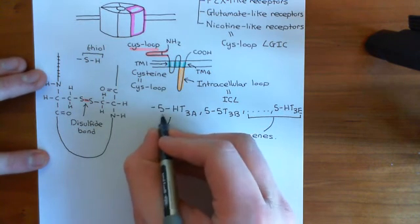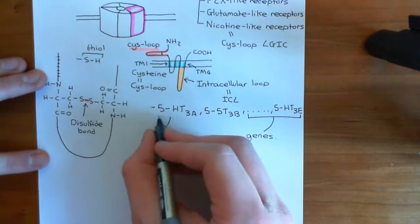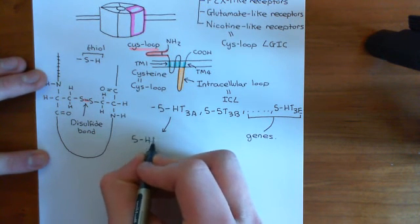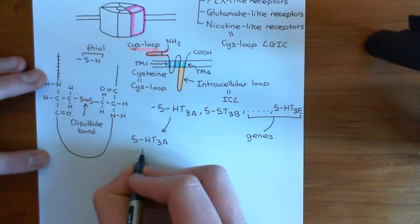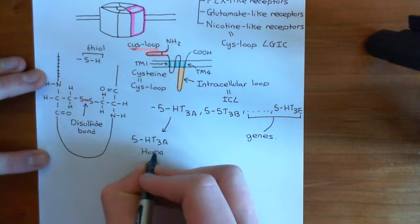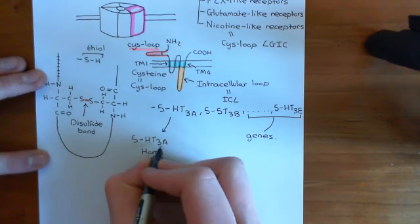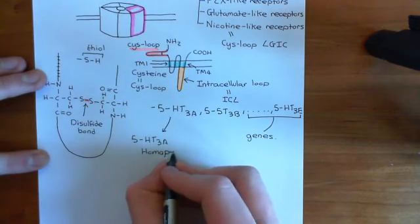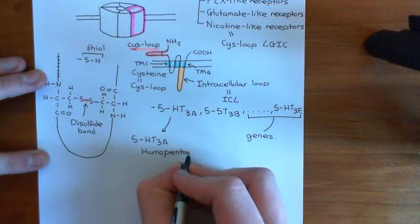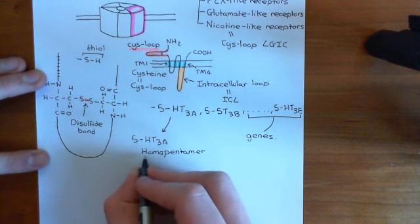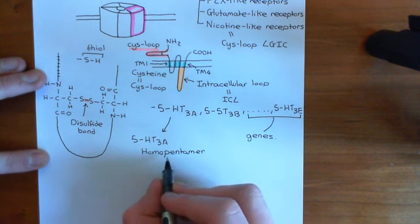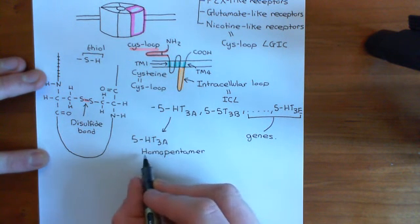One way is that you can pentamerize five 5-HT3A receptor subunits together to make a 5-HT3A homopentamer. If you make five 5-HT3A subunits and join them all together, that's called the 5-HT3A homopentamer. 'Homo' means the same, and pentamer means a five-subunit structure — so the five subunits used to make the pentamer are exactly the same.